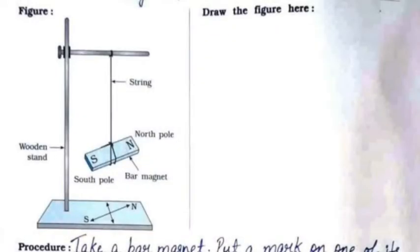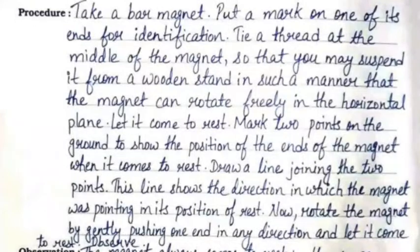You need to draw the same figure on the right-hand side. The procedure is: take a bar magnet and put a mark on one of its ends for identification. Tie a thread at the middle of the magnet so that you may suspend it from a wooden stand in such a manner that the magnet can rotate freely in the horizontal plane. Let it come to rest.